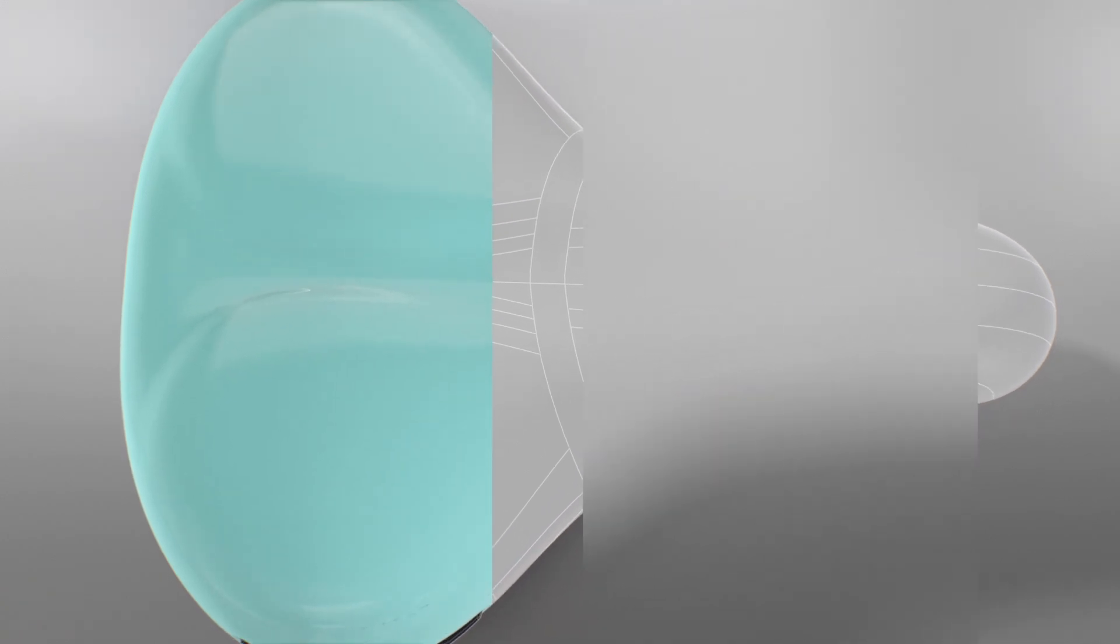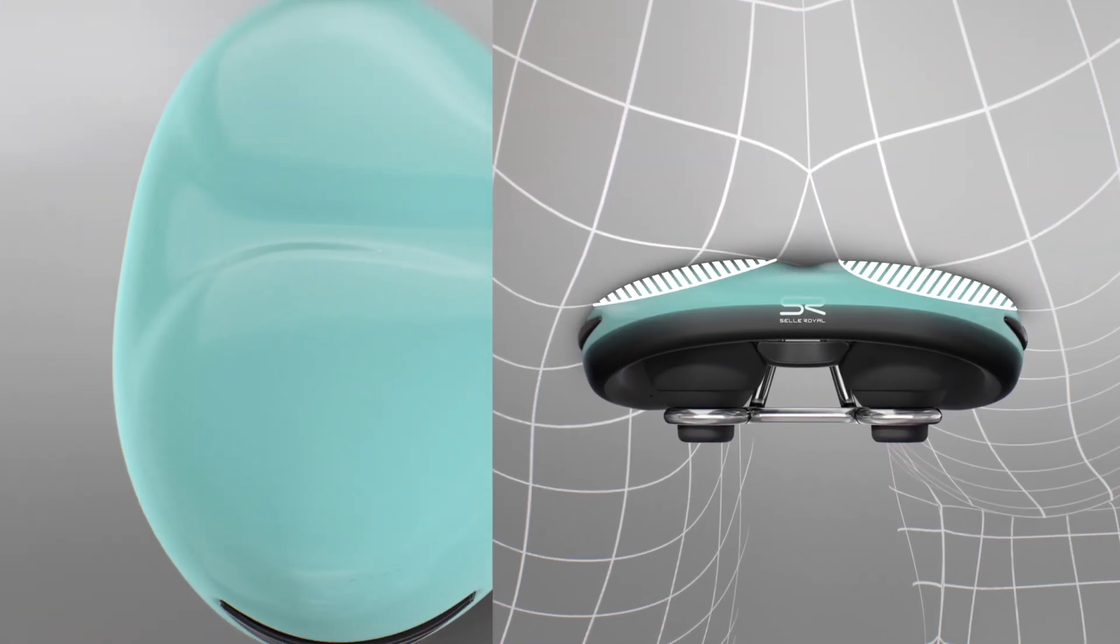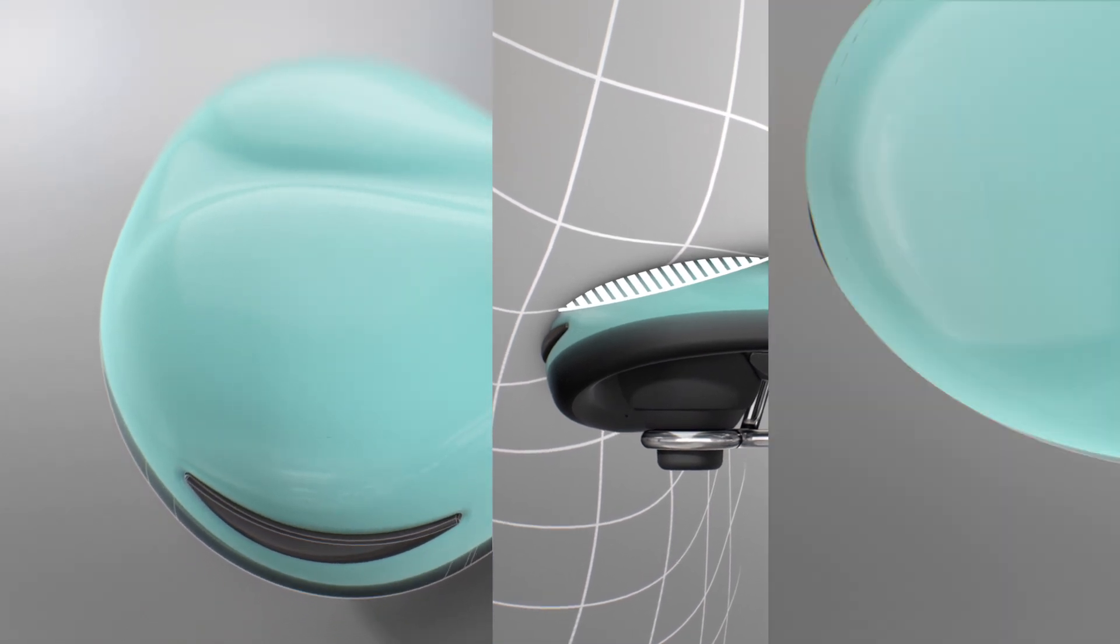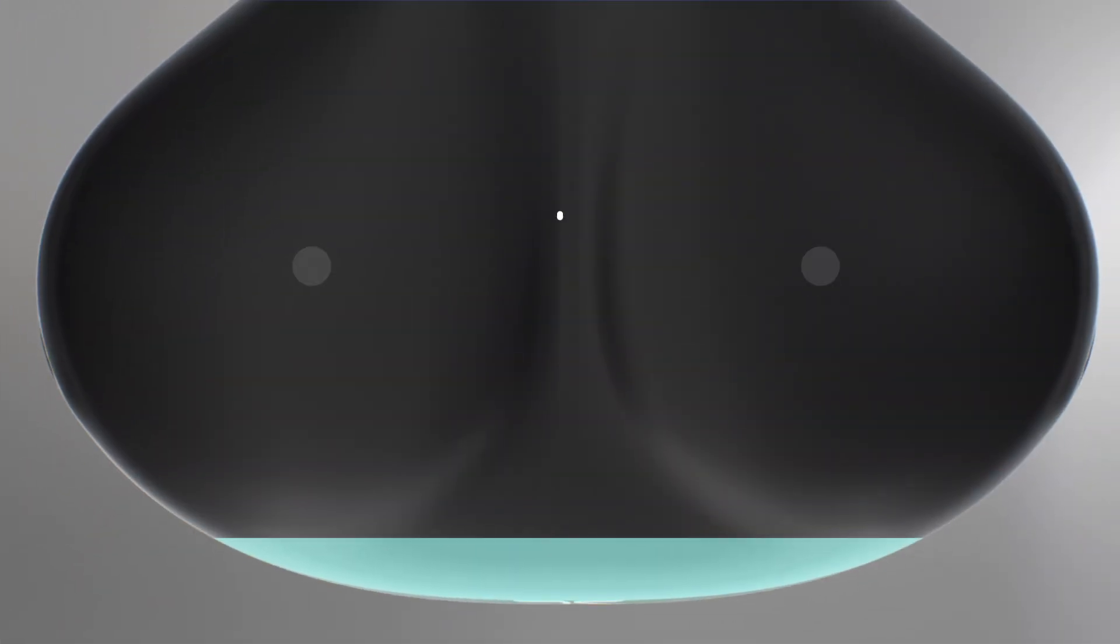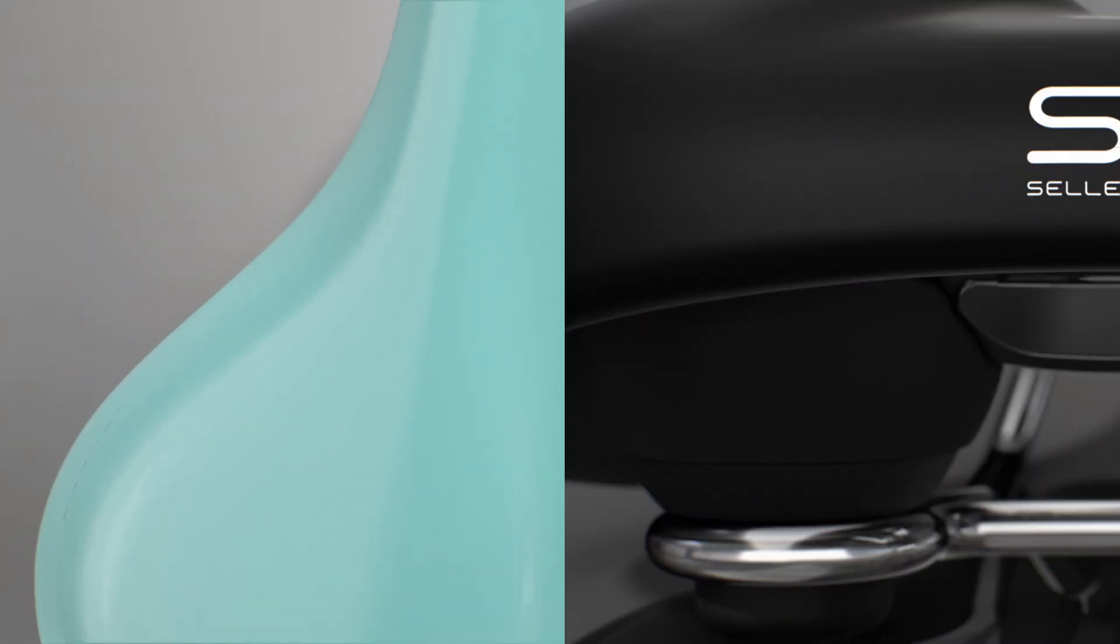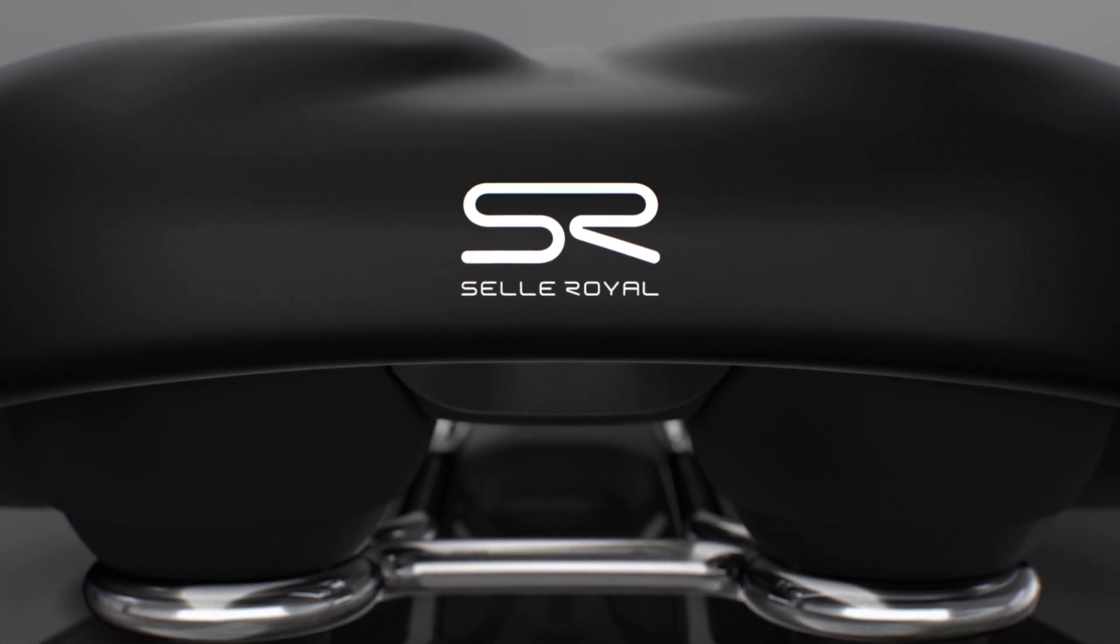Slow Fit Foam guarantees comfort by molding to your body shape as it comes into contact with the surface. Compared to other traditional foams, this results in better redistribution of body weight and other external forces like shock and vibrations, whilst offering better support for pedaling.